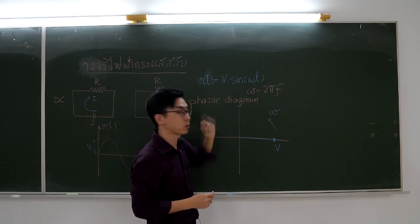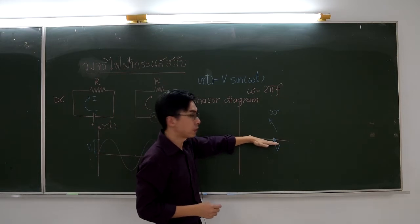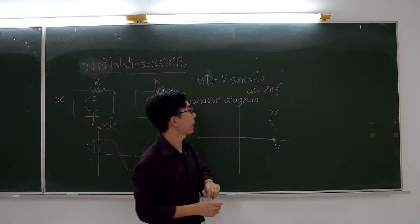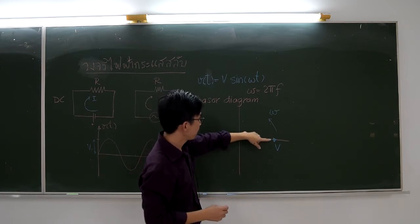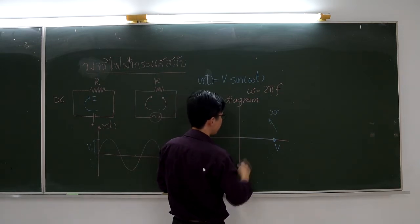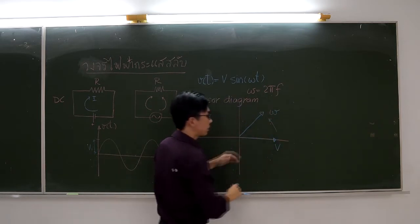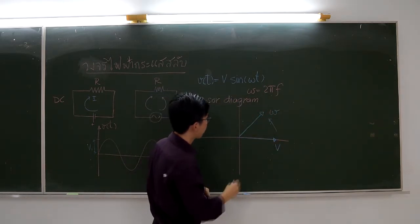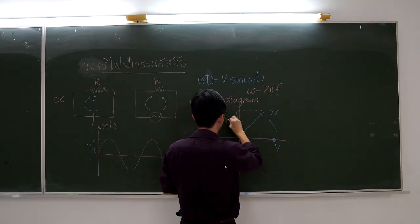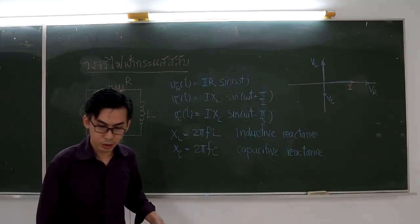This is the voltage. This is the concept of a phasor diagram. Here, the amplitude of the function is represented as a vector. And as the vector rotates at each moment, the projection of this vector onto the y-axis is the value of the function V. As you can see here, the shadow of this vector represents the voltage at that particular time.